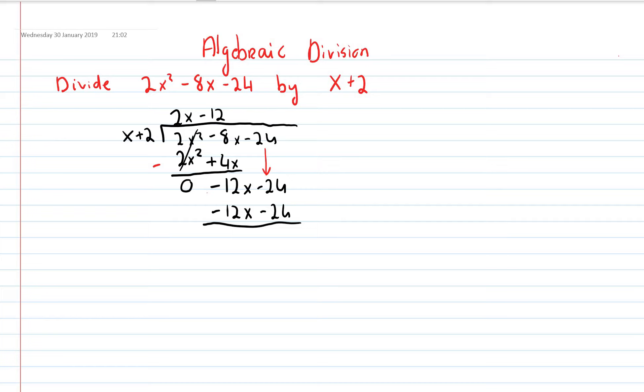And I'll take away. So minus 12x minus minus 12x. Again these signs might confuse you. So if they do, do it here. Minus 12x minus minus 12x plus 12x is just 0.